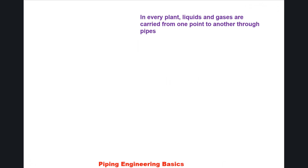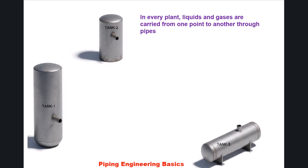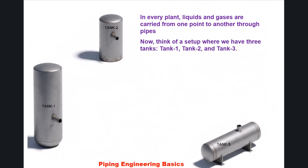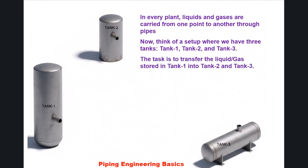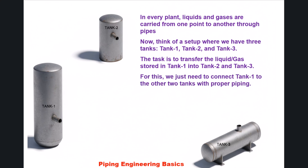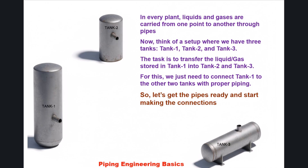In every oil and gas plant, liquids and gases are carried from one point to another through pipes. Consider a setup where we have three tanks — tank 1, tank 2, and tank 3. The task is to transfer the liquid or gas stored in tank 1 into tank 2 and tank 3. For this, we just need to connect tank 1 to the other two tanks with proper piping.